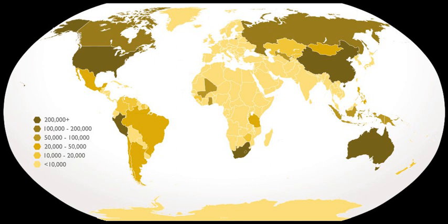Gold trading daily turnover in international commodity exchanges is of the order of 300 tonnes per day, nearly 110,000 tonnes per year, compared to 3,000 tonnes per year of global production. However, most of the trades are squared off without actual delivery. India being the dominant importer of gold, the Indian government can exercise full control on international gold trading when all its gold imports are channelled through it and distributed through the commodities exchanges of India.